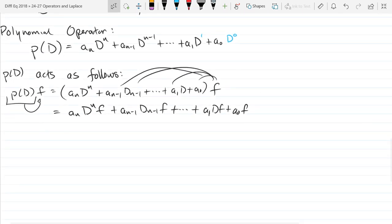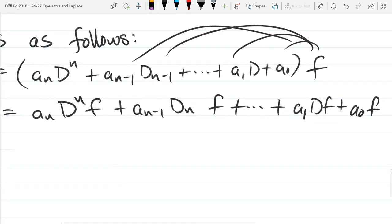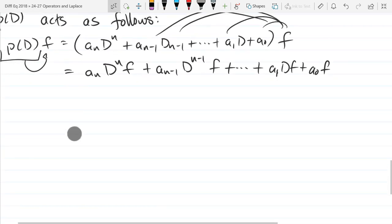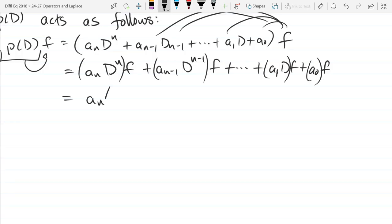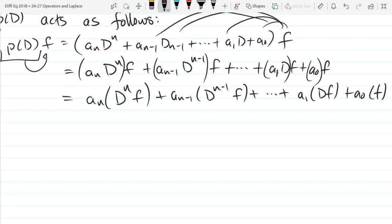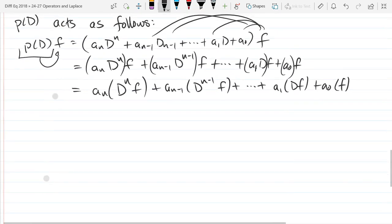This is a_n D^n of f plus a_{n-1} D^{n-1} f plus etc plus a_1 D f plus a_0 f. I've basically distributed f all the way across. It's important, the operator is not commutative. We can regroup and write it as a_n times the nth derivative of f. That's how polynomial operators act. You're basically distributing like this.